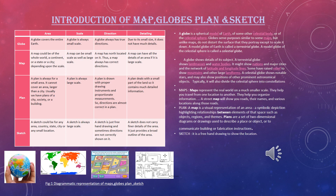A plan always covers a small area. It cannot cover an area larger than a city. Usually, we have plans of a city, society, or building. A plan is always large scale and is drawn with proper drawing instruments and proportionate measurements. So directions are almost correct in a plan. A plan deals with small parts of the land, so it contains much detailed information about the small region.